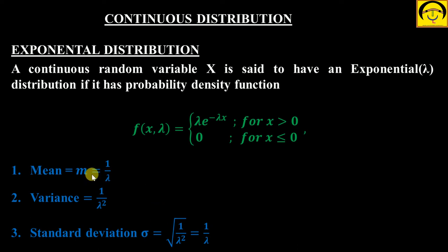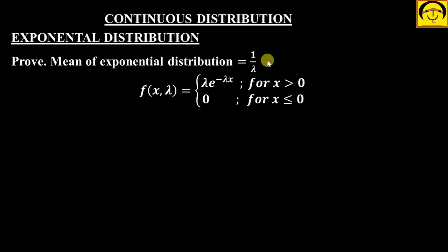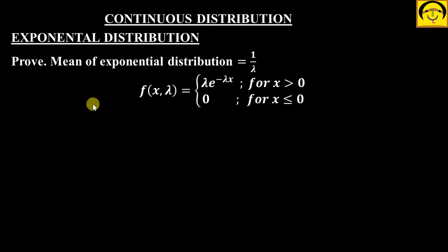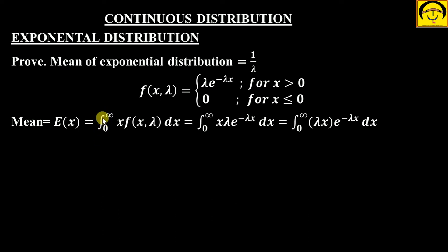Chalo shuru karte hain mean ka proof. What is mean of exponential distribution? It is 1/λ — you need to show this. Mean kaise karenge? F(x) aapko pata hai yeh PDF kya hota hai. X multiply by PDF — agar discrete hoga to summation aayega, aur continuous hoga to integral aayega. To this is a continuous distribution, so it will be integral. Usually minus infinity to infinity hota hai, lekin minus infinity to zero mein yeh zero hai, so bacha hua portion non-zero woh zero to infinity mein hai.